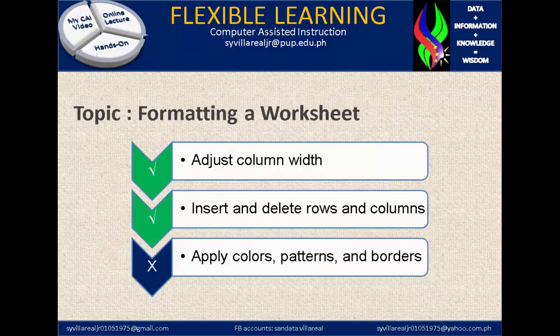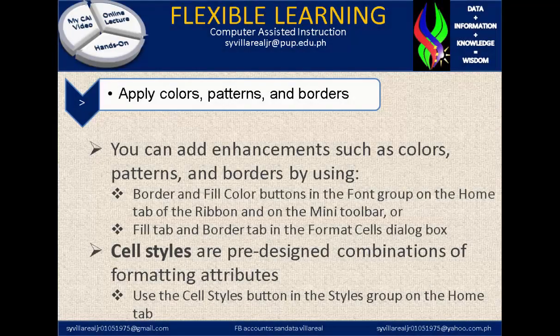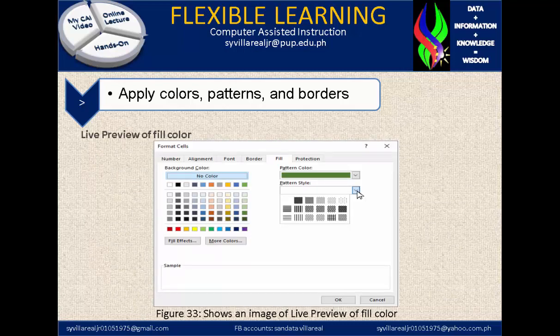Now let's proceed to our last topic for today: Apply Colors, Patterns, and Borders. You can add enhancements such as Colors, Patterns, and Borders using the Border and Fill Colors button in the Font group on the Home tab of the ribbon and on the Mini Toolbar, or the Fill Tab and Border Tab in the Format Cells dialog box — either by using the ribbon or by right-clicking. Cell Styles are pre-designed combinations of formatting attributes, accessed using the Cell Styles button in the Styles group on the Home tab. Figure 33 shows an image of a Live Preview of Fill Color.